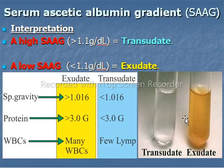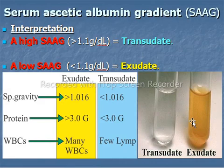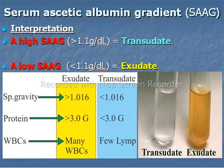The ascitic fluid sample is usually considered to be either an exudate or a transudate. One way to differentiate them is the serum ascitic albumin gradient (SAAG), which indirectly measures portal pressure and can be used to determine if the ascites is due to portal hypertension.